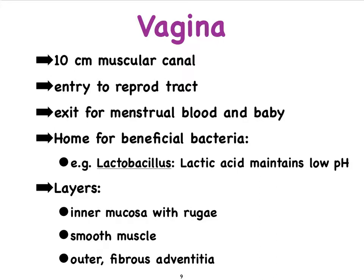basically bacteria that are absolutely necessary, that maintain an acidic environment in the vagina. The vaginal canal is not a very smooth canal. It actually has a mucosa rich in rugae — we've seen that term before in the stomach and even in the collapsed bladder. It also has a smooth muscle layer and then an outer rather fibrous adventitia. So these are your three layers from deep to more superficial.